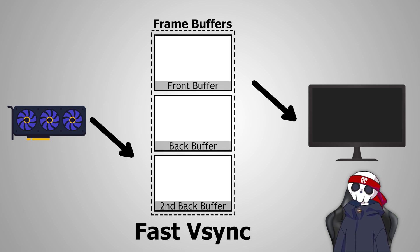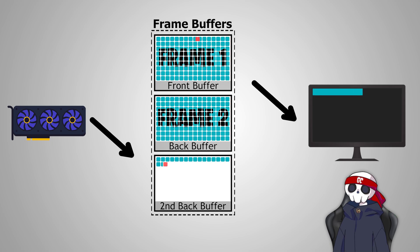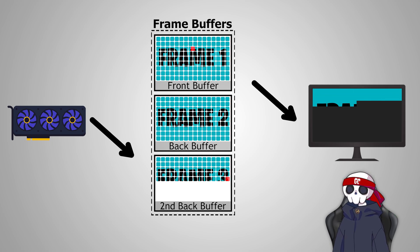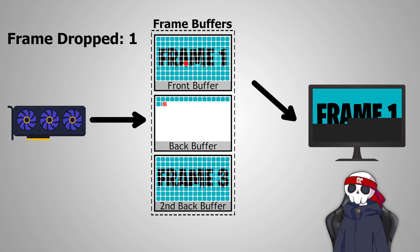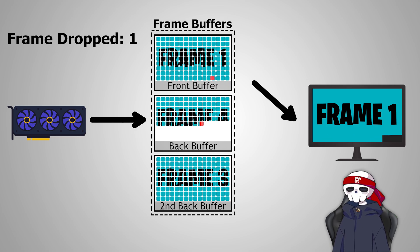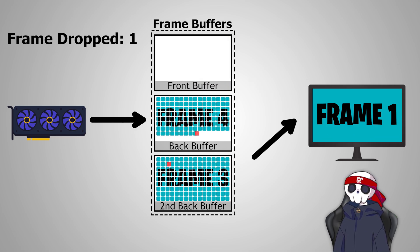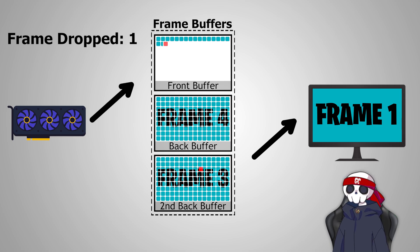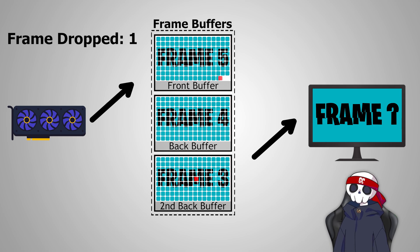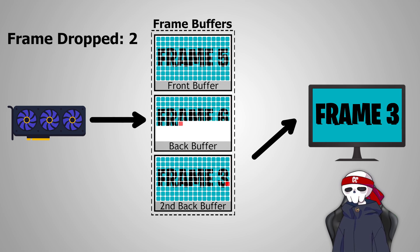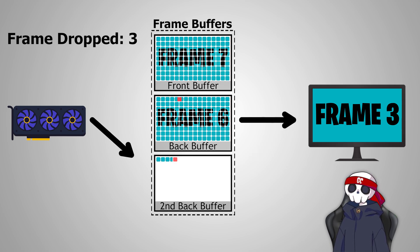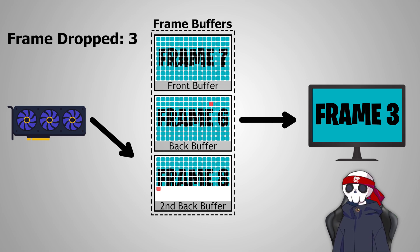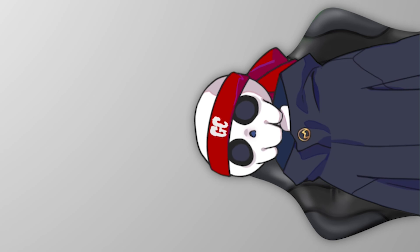To solve this problem, NVIDIA invented Fast Sync, which is similar to triple buffering but without the resync wait. Your GPU renders three frames while your monitor is still displaying the first frame — instead of waiting, your GPU renders the next frame in an available buffer, discarding the previously rendered frame. As soon as your monitor finishes, it displays the last rendered frame. That way your GPU doesn't have to wait and your input latency decreases because you're seeing the newest rendered frame. However, this technology drops frames, and frame drops increase as the difference between your monitor's refresh rate and your GPU's render rate grows larger.